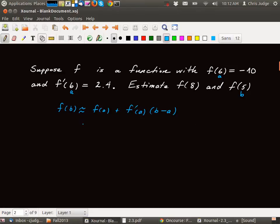So here we replace the 8 with a 5. Okay, so again f of a, we know what that is. That's minus 10. f prime of a is 2.4. b this time is 5, and a is 6.